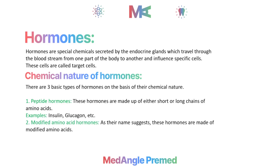The second type of hormones are called modified amino acid hormones. These hormones are made from special or modified amino acids. Examples include thyroxine, epinephrine, norepinephrine, and noradrenaline.